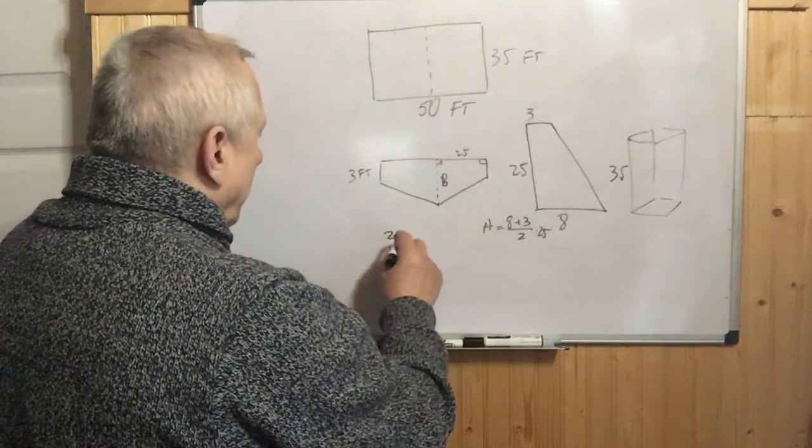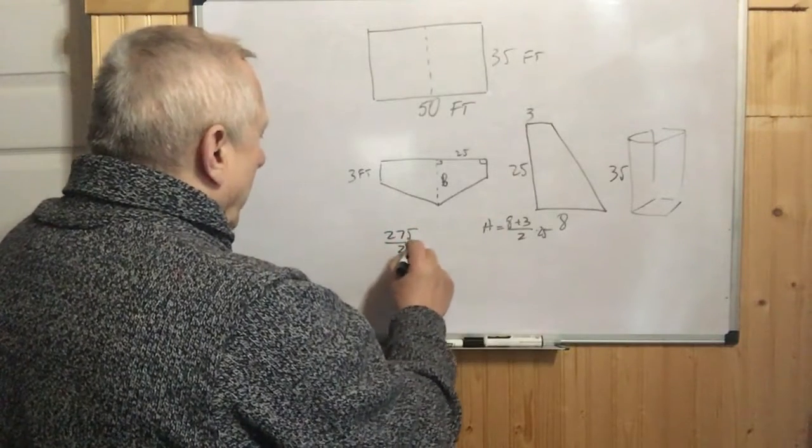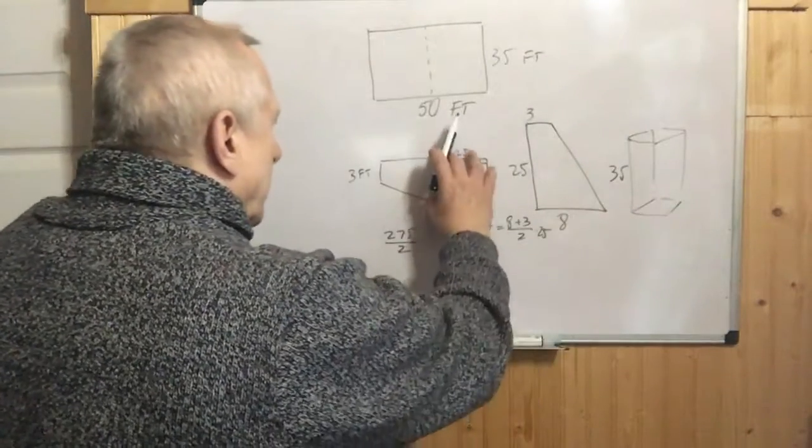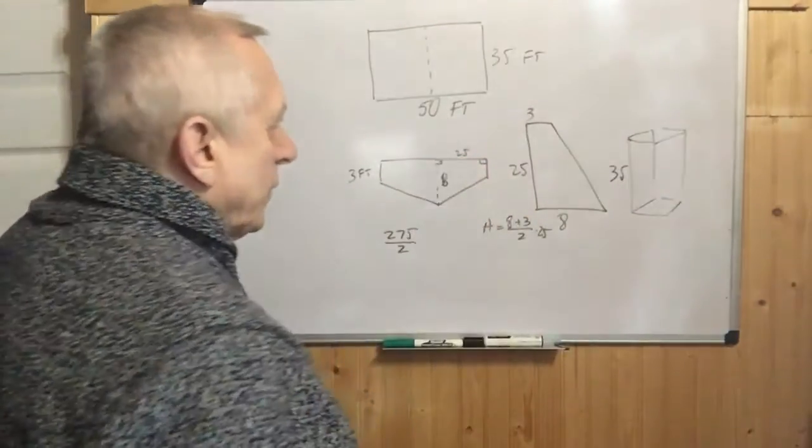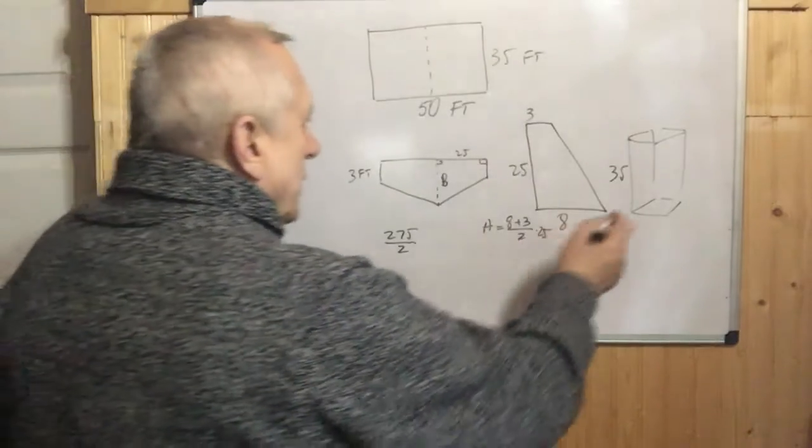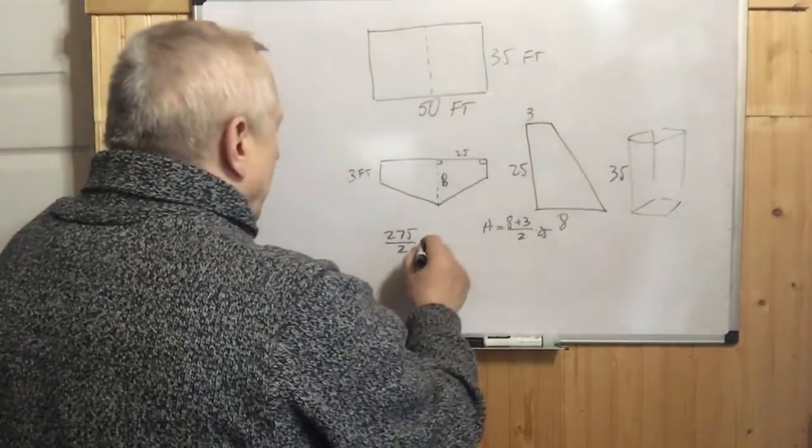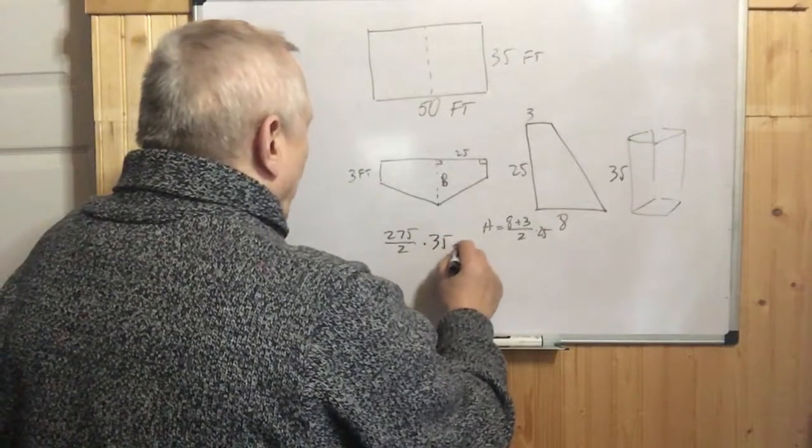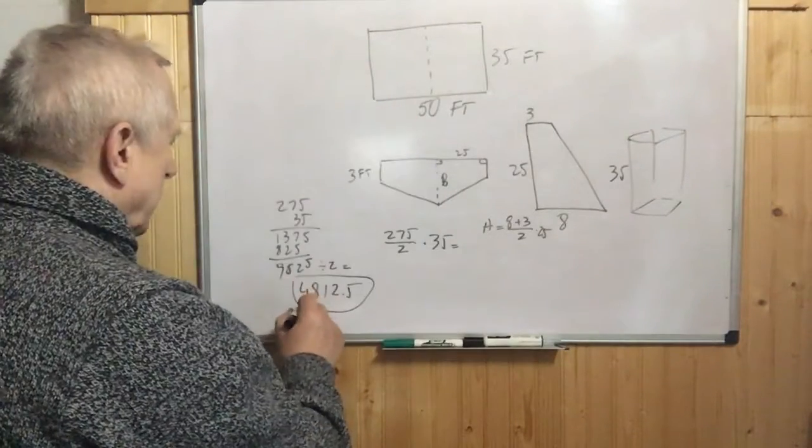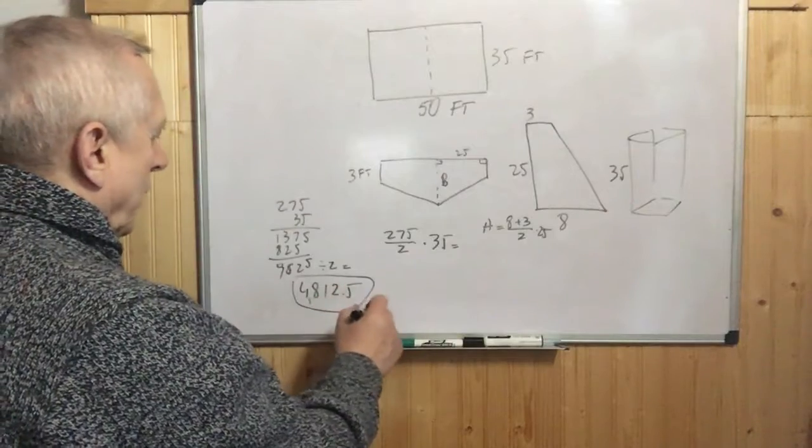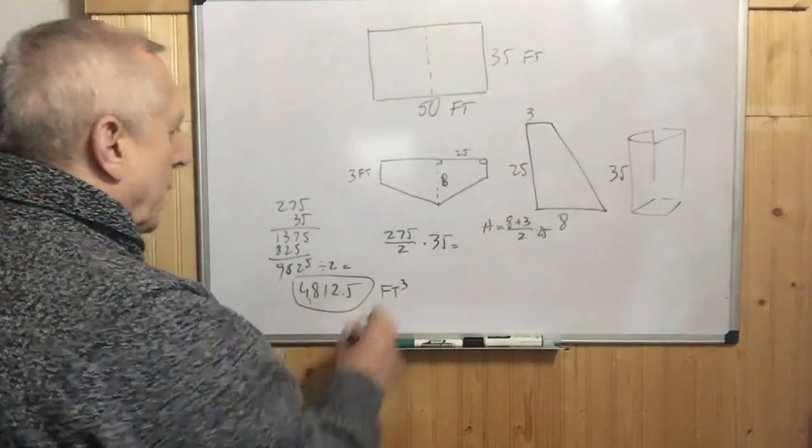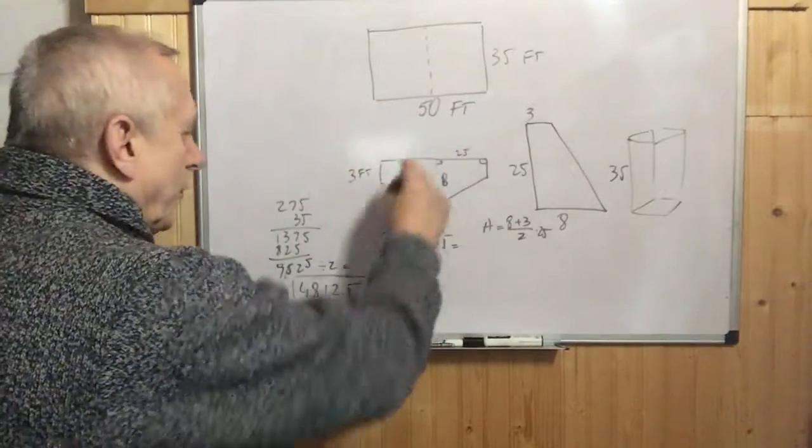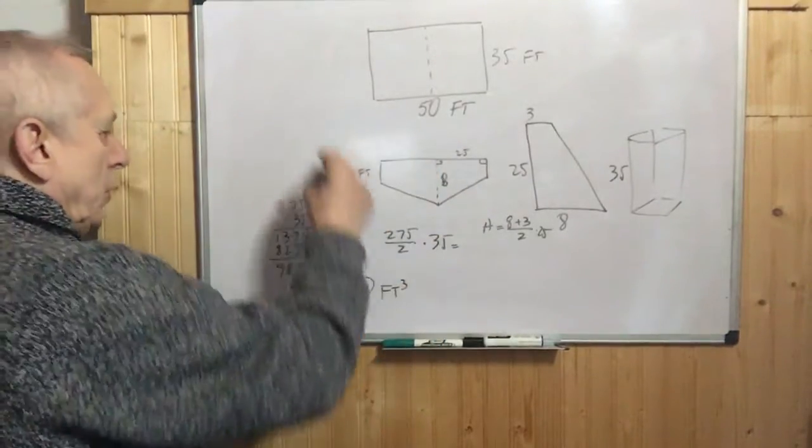That's the area of the base of this part of the pool, and we have to multiply it with the 35, the height. Let's see how much is that - 4812.5 cubic feet. But hold on a second, this is only half of it.